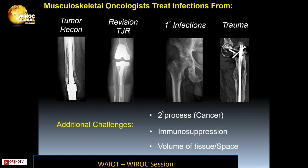Musculoskeletal oncologists treat infections from tumor reconstruction, revision joint replacement, primary infections, and trauma. Their additional challenges include dealing with the secondary process of cancer, patients who are immunosuppressed, and the volume of tissue and bone loss.